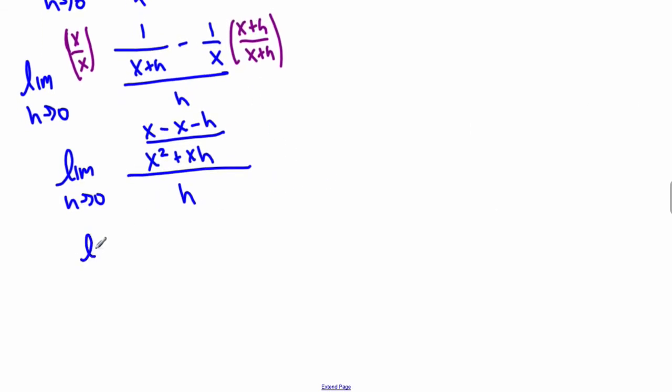Limit as h approaches 0, x minus x goes away, so we're left with minus h all over x squared plus xh, all over h.